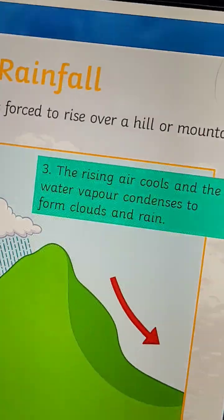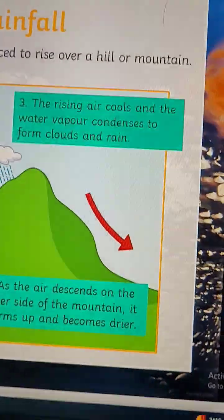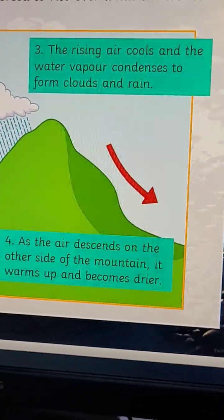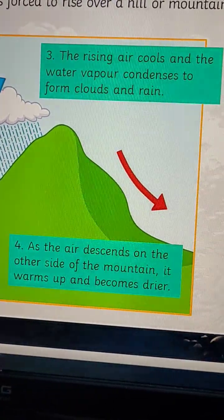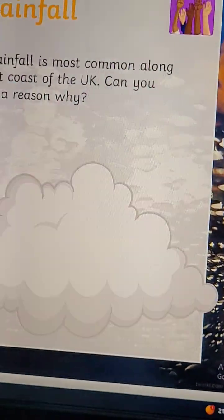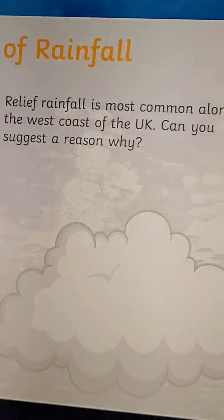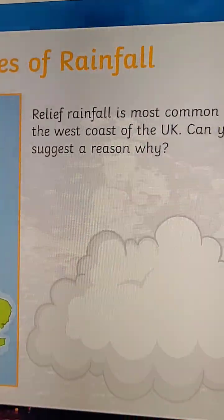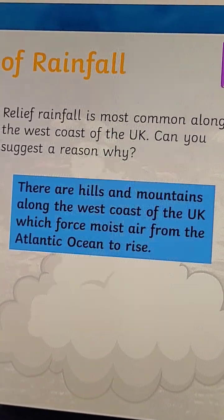As the rising air cools, the water vapor condenses to form clouds and rain on the hill side. Then, as the air descends on the other side of the mountain, it warms up and becomes drier — so on one side there is rain, and on the other side there is no rain.